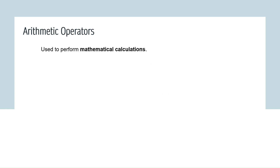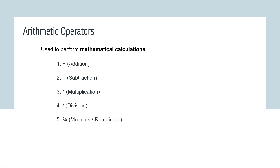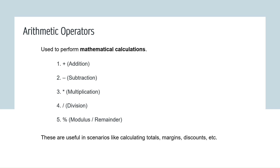Arithmetic operators are used to perform mathematical calculations — addition, subtraction, multiplication, division, or modulus/remainder. These operators are mostly useful in scenarios like calculating totals, calculating margins, or calculating discounts — wherever you want to actually perform mathematical calculations. Let's take a quick example to understand how to make use of arithmetic operators to write SQL queries.